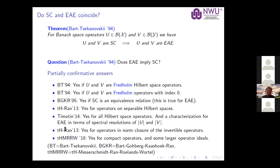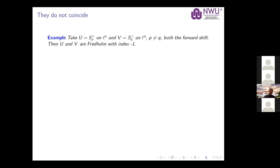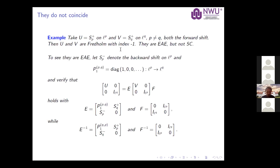A few years ago we found a counterexample. And of course once you find a counterexample after a long time, you also find an easy counterexample. You take U and V to both be forward shift operators but on different L^p spaces — one on L^p, the other on L^q — and they must be different. These are Fredholm operators with index zero. My claim is they are equivalent after extension but not Schur coupled, which connects nicely to the earlier result requiring the index-zero condition for Banach space operators.